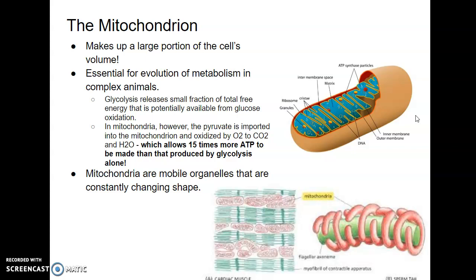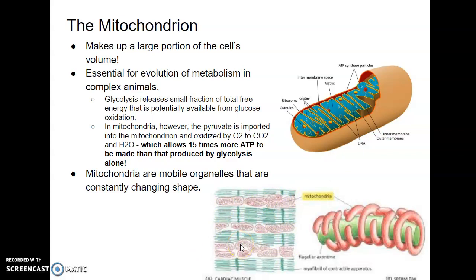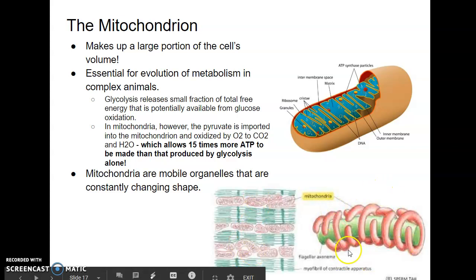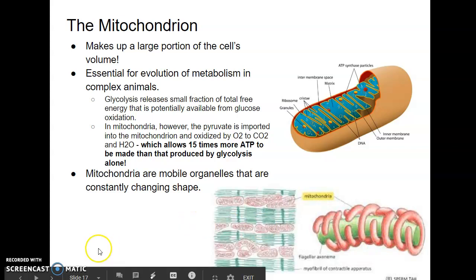Mitochondria can be different shapes — they can also fuse together and separate from each other. Whether or not they are associated with microtubules determines their shape, orientation, and ultimately how they're distributed. Some mitochondria are long and moving, whereas others are packed tightly together. For example, in cardiac muscle, mitochondria are packed tightly together amongst myofibrils. In a sperm tail, the mitochondria (shown in red) are wrapped around the flagellar axoneme.